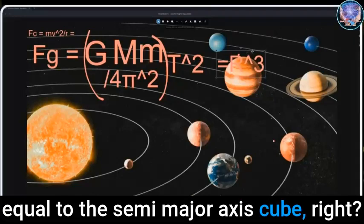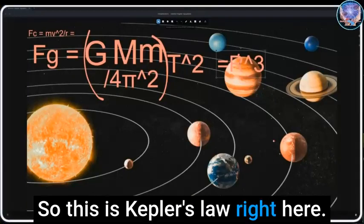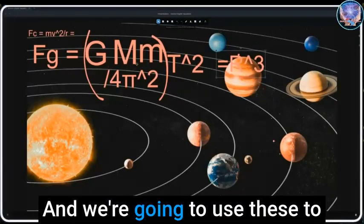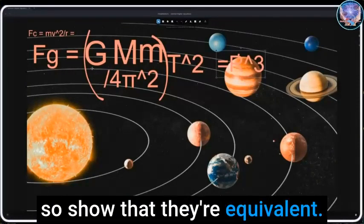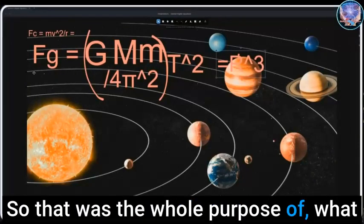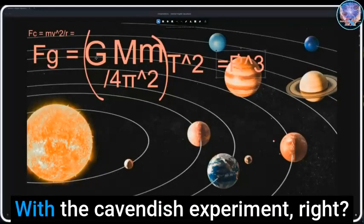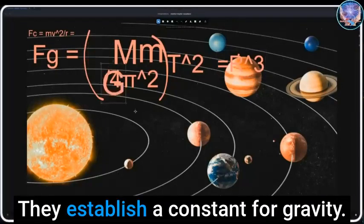That breaks down to GMm over 4π²r² times t² is equal to the semi-major axis cubed. So this is Kepler's law right here, and then this is Newton's law. We're going to use these to derive one another and show that they're equivalent. That was the whole purpose of what they did there, what they established there with the Cavendish experiment.